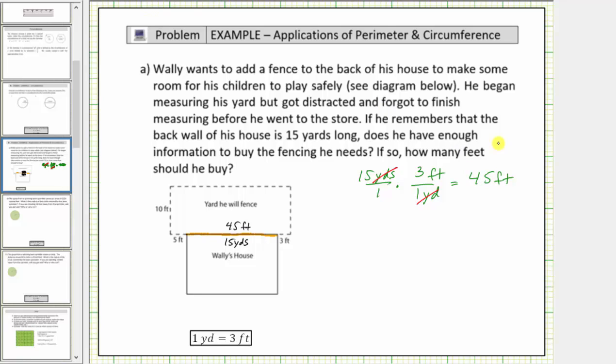Now going back to the diagram, we need to find this length here in feet to determine how much fencing he needs. Looking at the information here, we have five feet plus forty-five feet plus three feet, and therefore this length is fifty-three feet.